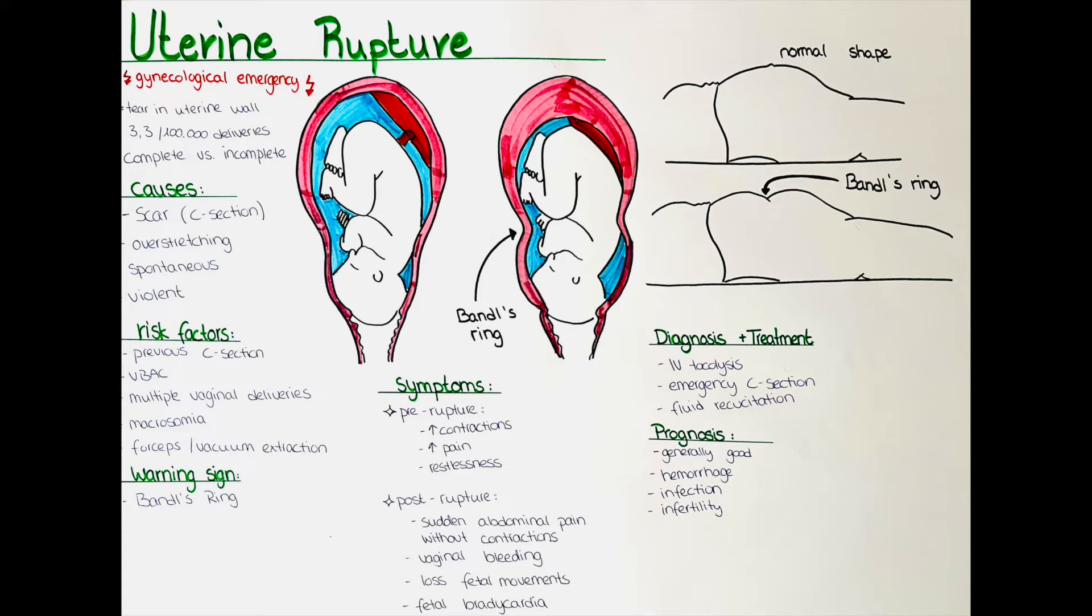This is especially important in cases where a woman who has had a c-section tries to have a vaginal birth after a cesarean, often abbreviated as VBAC. This is because in a vaginal delivery, the pushing of the mother brings extra stress on the tissue of the uterus.